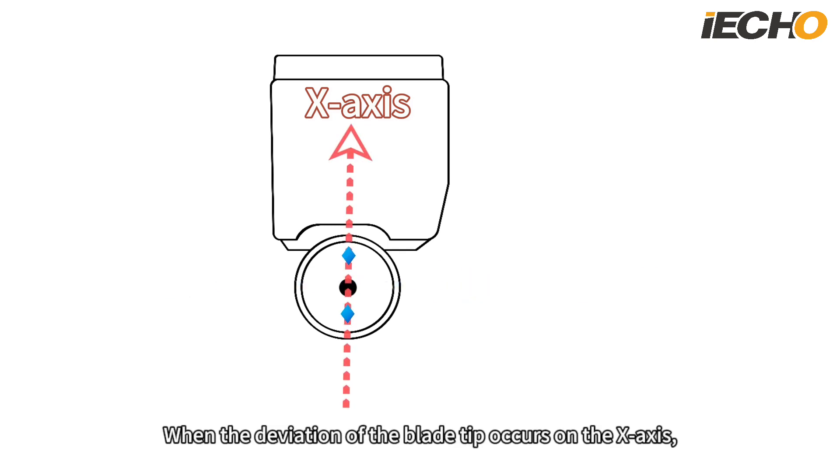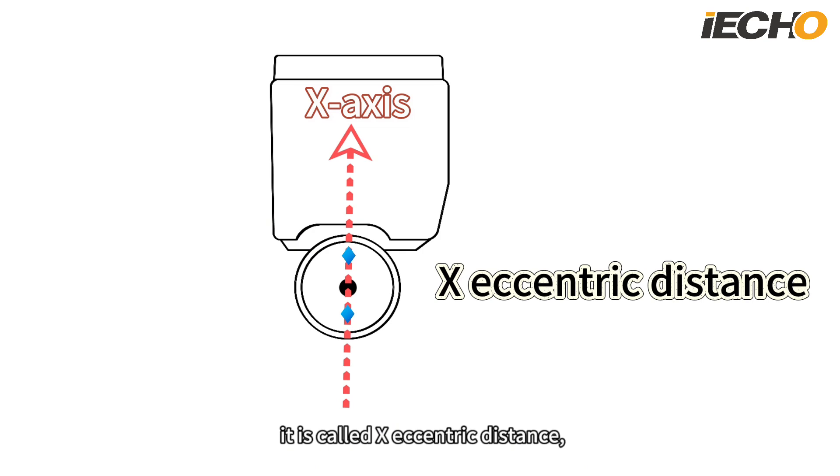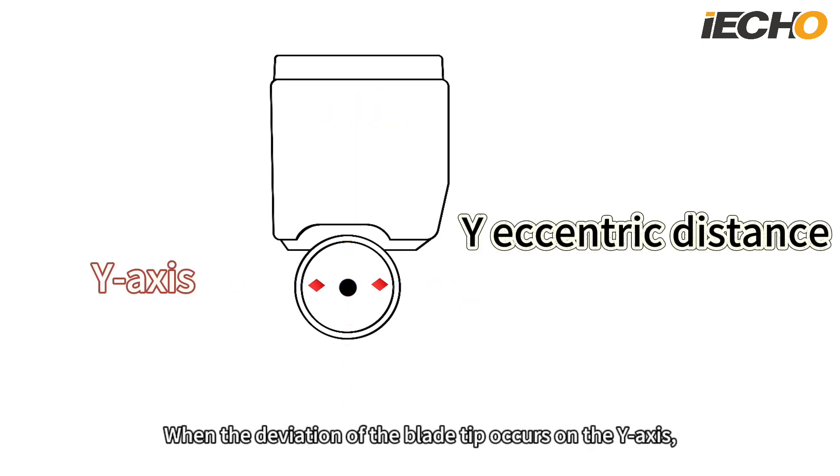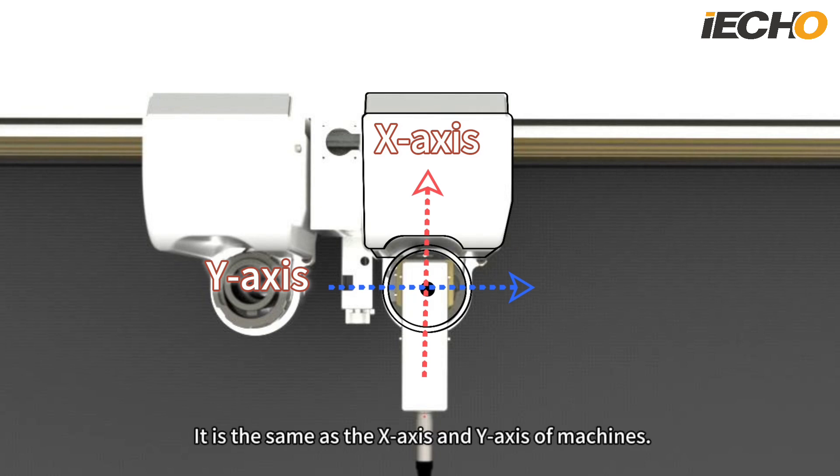When the deviation of the blade tip occurs on the X-axis, it is called X-eccentric distance. When the deviation of the blade tip occurs on the Y-axis, it is called Y-eccentric distance. It is the same as the X-axis and Y-axis of machines.